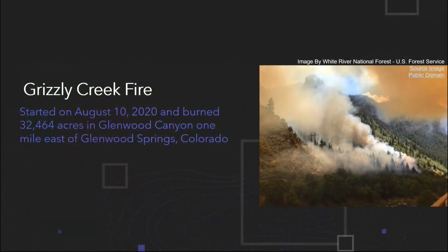A little background on the Grizzly Canyon Fire: it started on August 10th, 2020, and burned around 32,464 acres by September 3rd, and it was 82% contained at that point.